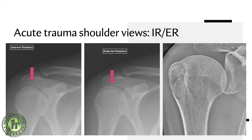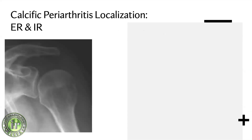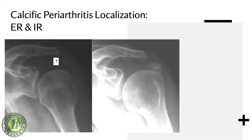Internal and external rotation views are particularly useful for localizing calcifications. Here's a case of acute shoulder pain: the internally rotated view looks completely normal, but the externally rotated view shows the greater tuberosity coming out with a calcification clearly visible. Because the calcification is not seen on internally rotated views but is seen on externally rotated views, this is classic for supraspinatus calcific tendinosis.